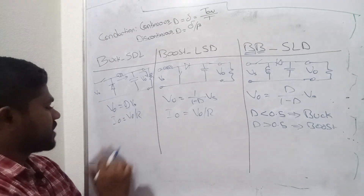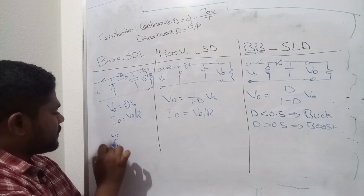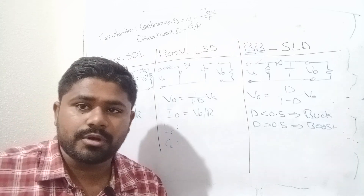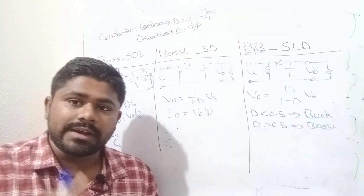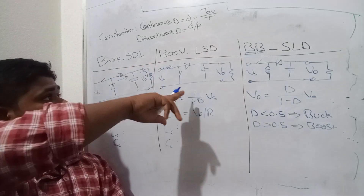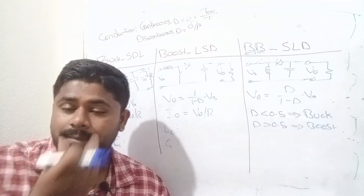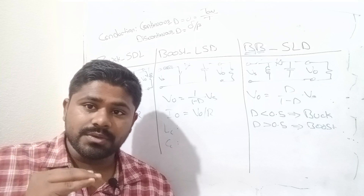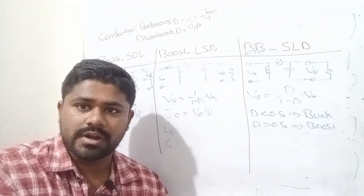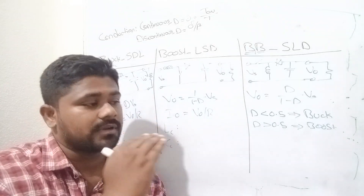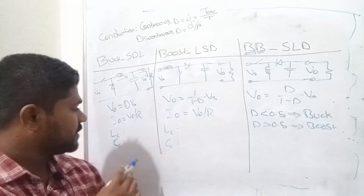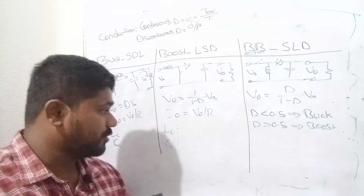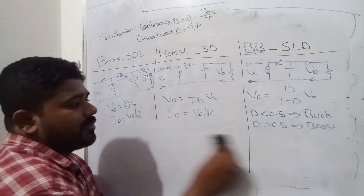There are two important formulas in buck converter and boost converter: that is critical inductance and critical capacitance formulas. The chopper has continuous mode of conduction and discontinuous mode of conduction. The critical value of inductance and capacitance defines the boundary. Below these values, our device might slip into discontinuous mode of conduction. Above these critical values, our converter will slip into continuous mode of conduction. So these formulas are needed to be remembered. Note that critical inductance and capacitance formulas are dependent on load.